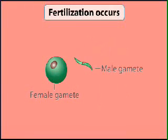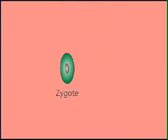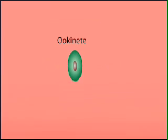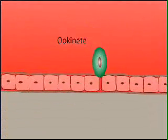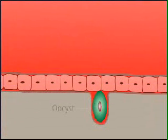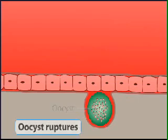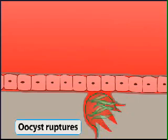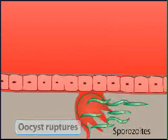A male and a female gamete fuse to produce the first cell of the next generation, the zygote. The zygote matures into a motile cell called an ookinete and migrates to the wall of the mosquito's gut, where it develops into an oocyst. Inside the oocyst, cell division occurs to produce many new cells, again in the form of sporozoites.